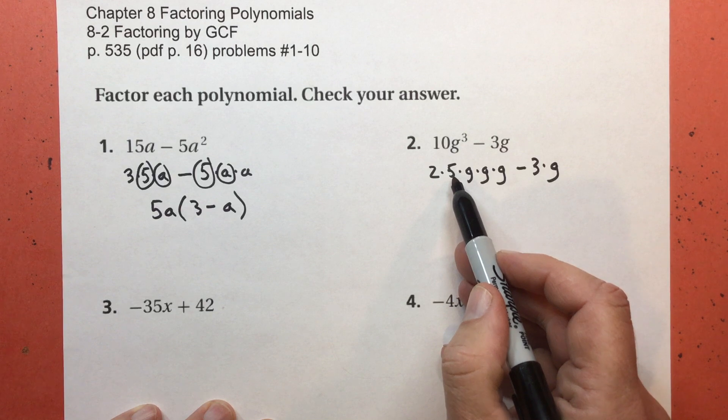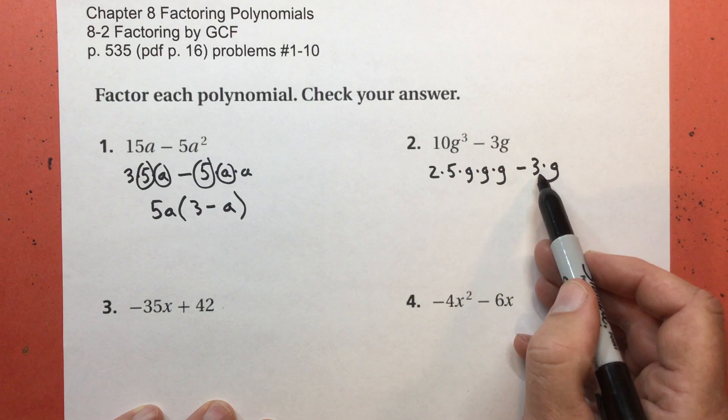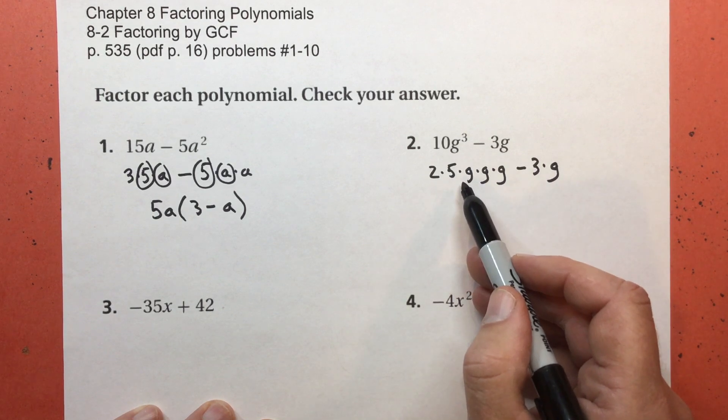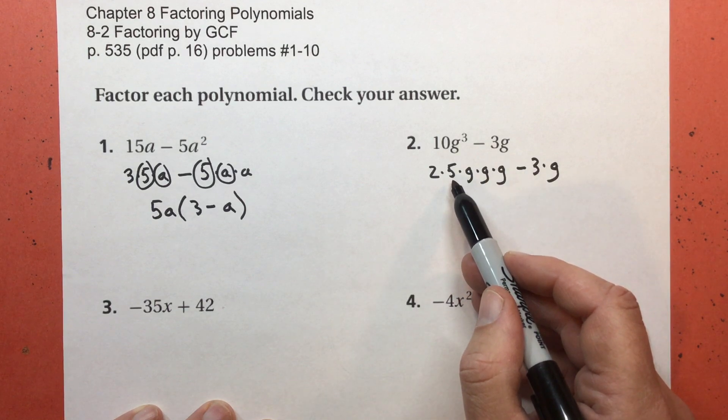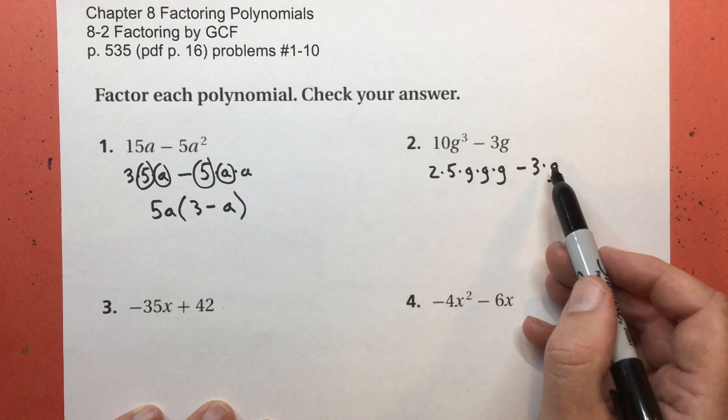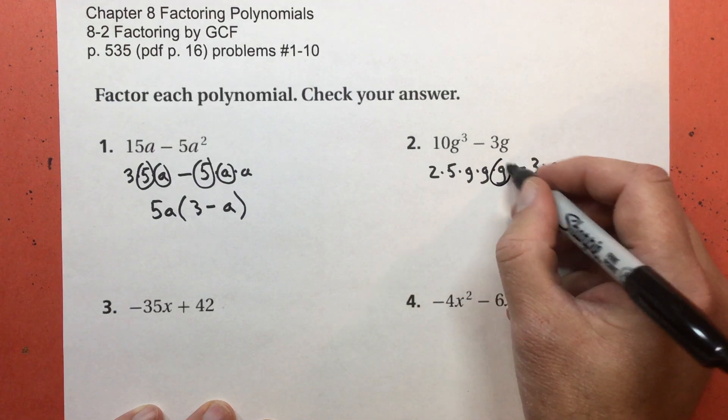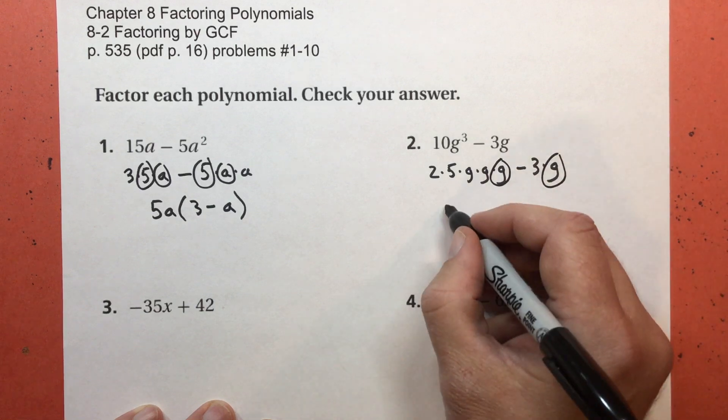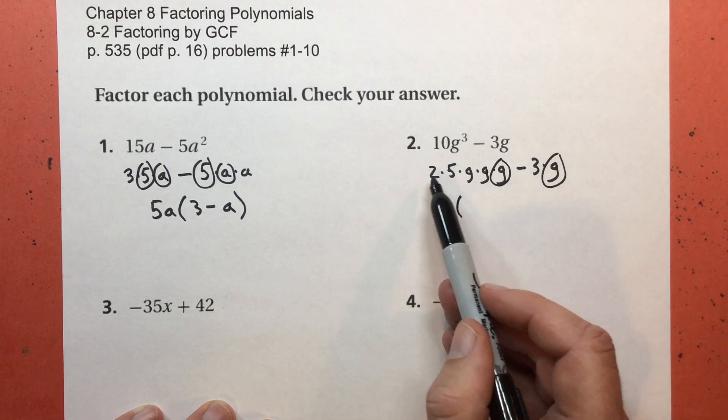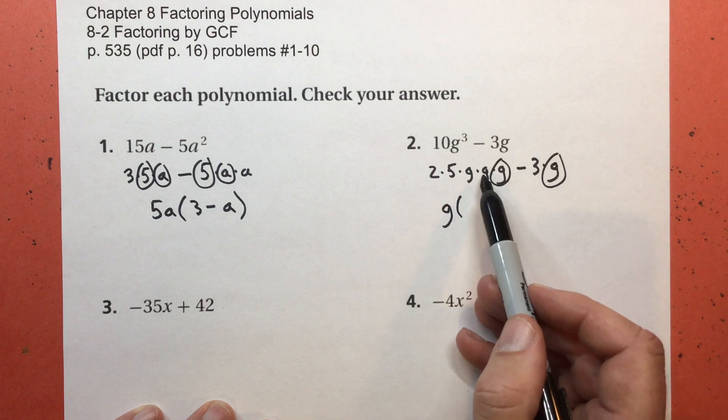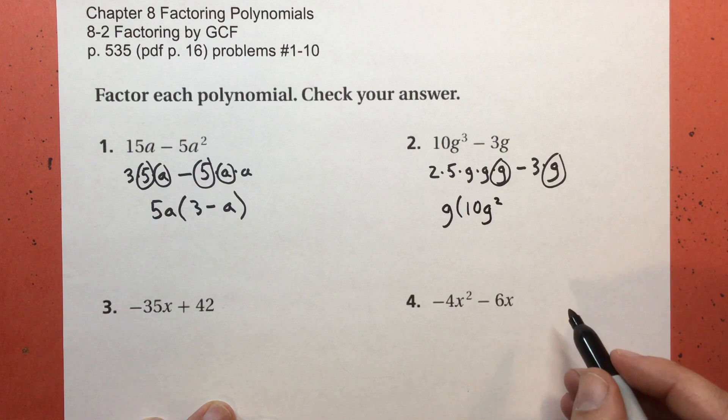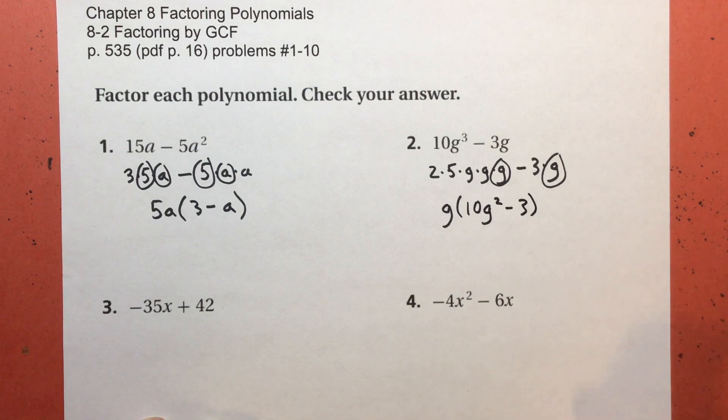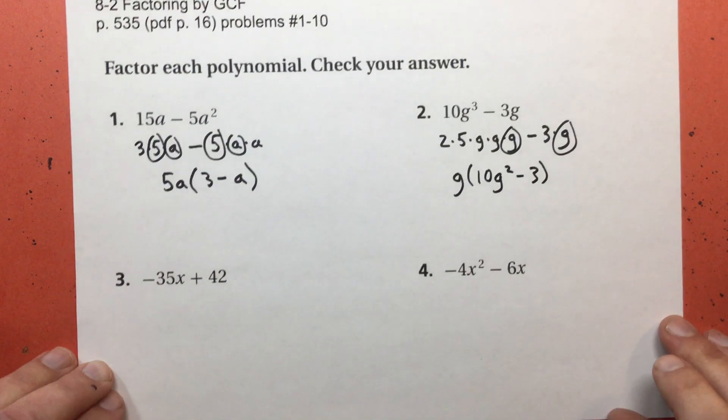All right. 2 times 5, there's no 2s or 5s over here. 3s here, there's no 3s over here. So it does not have a common constant factor. I have G times G times G. I have 1G over here. So it has a common factor of G. What got left behind? 2 times 5 is 10. G times G is G squared. 10 G to the second power. What got left behind? The subtract 3. I was thinking more would come out of that one, but not so.